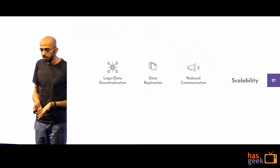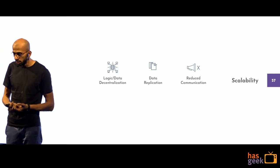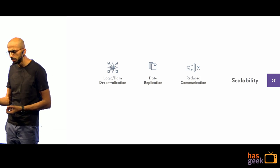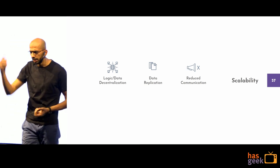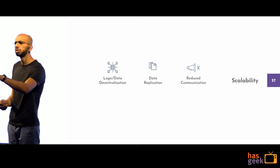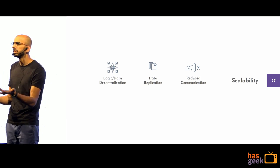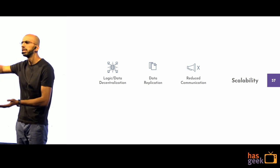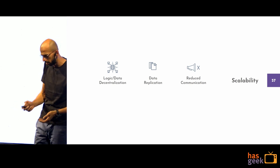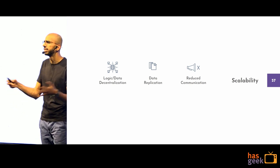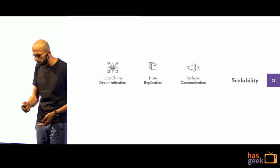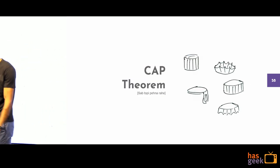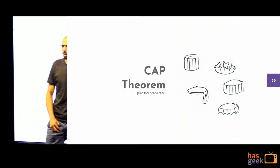Scalability is comprised of logical and data decentralization, data replication, and reduced communication. Reduced communication happens when the client absorbs risk — for example, validate forms on the client side instead of sending every input to the server. The less you communicate, the fewer chances of failure, because the network is unreliable.